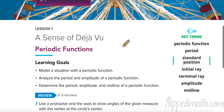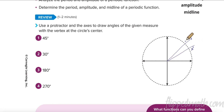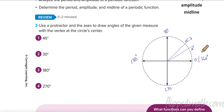Lesson one is called 'A Sense of Deja Vu' — an intriguing title. It's about periodic functions, which keep repeating over and over again. You'll need a protractor to measure angles. A 45-degree angle looks like this, a 30-degree angle like this, 90 degrees is here, 180 degrees is here, 270 degrees is here. We could keep going — 360 plus 45 more degrees gets us to 405, which is the same position as 45 degrees.